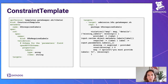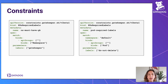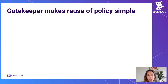The constraint template is an object where you describe a set of parameters for your policy and a set of Rego code. For example, for required labels, we have a property for the number of labels we want to require, and then you instantiate that into as many policy rules as you want. With just that template, we can have two very different rules: all namespaces require the Gatekeeper label, but all pods require the DoNotDelete label. Gatekeeper makes reuse of policy very simple.